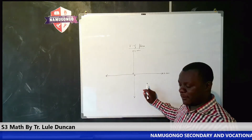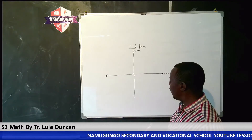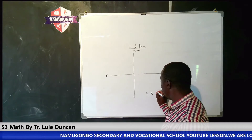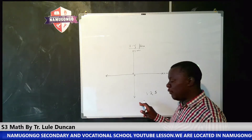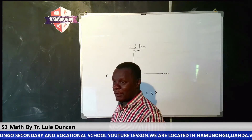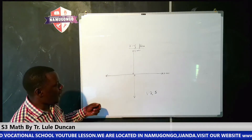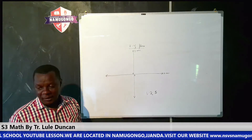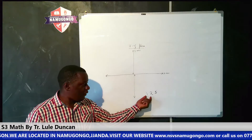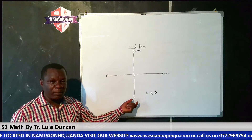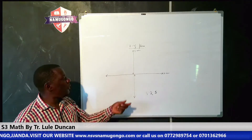Under our objectives, we are going to look at how do you choose a suitable scale. Scales are chosen from multiples of one, two, and five. The X scale can be different from the Y scale. The vertical scale can be different from the horizontal scale. The choice whether to use one, two, or five will depend on the data given.